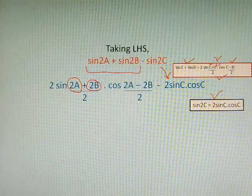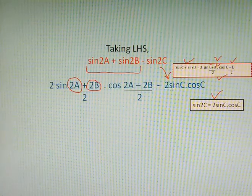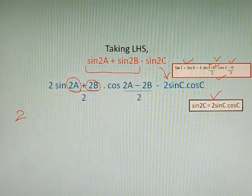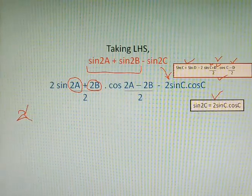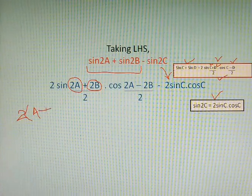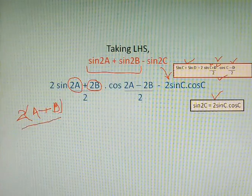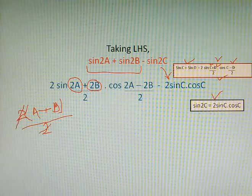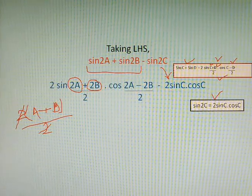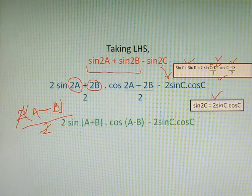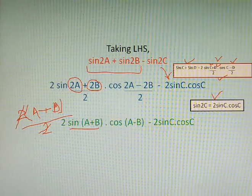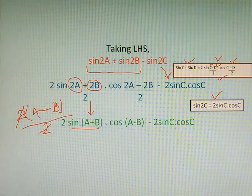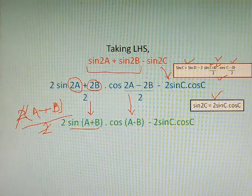To move to the next step, we take 2 common from the angles. Taking 2 common, A and B remain inside the bracket and as there is 2 in denominator, we can cancel this denominator and numerator. So this can be written as sin(A+B) and following the same rule we can write cos(A-B).